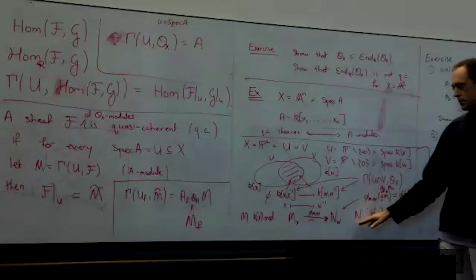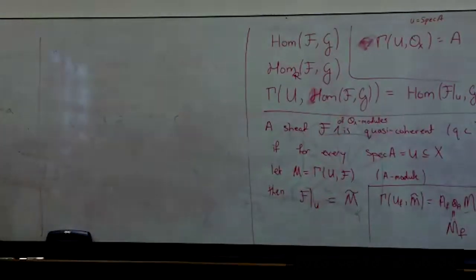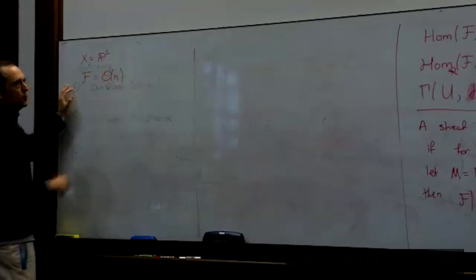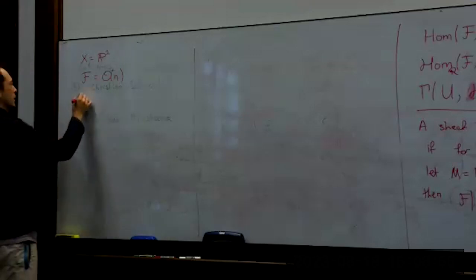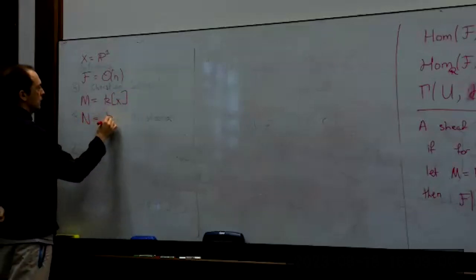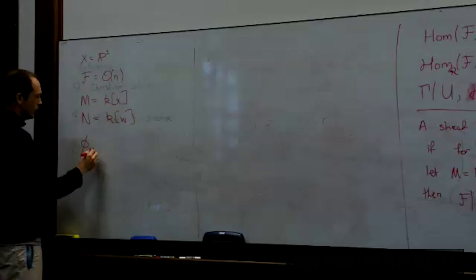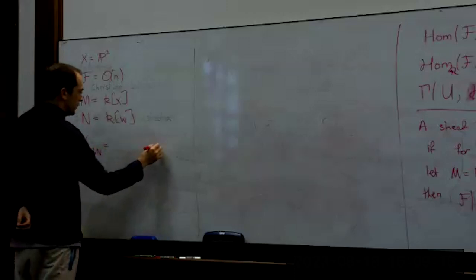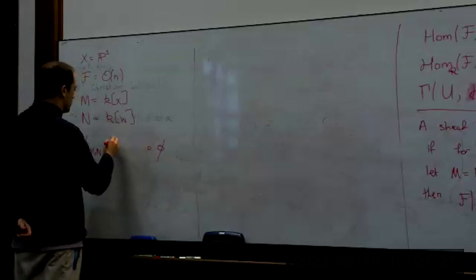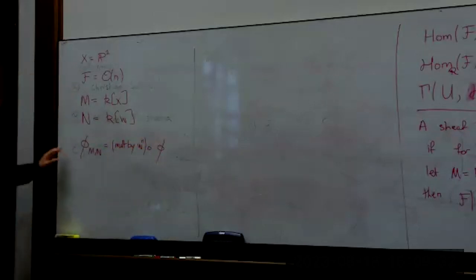The most common example, continuing with X = P1, is the line bundle O(n). I choose M = k[x], N = k[w], and the map phi: I need a map between these two localized modules — I let it be multiplication by w^n. So phi sends 1 to w^n, and since w is a unit in k[w, w^{-1}], this is invertible — giving an isomorphism. That's the sheaf O(n).